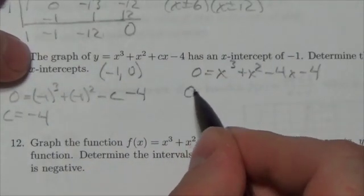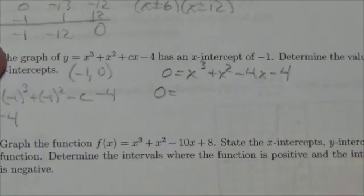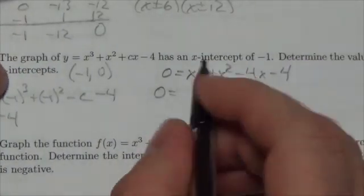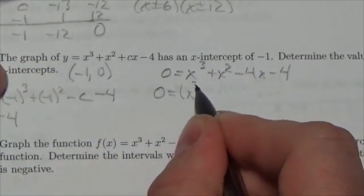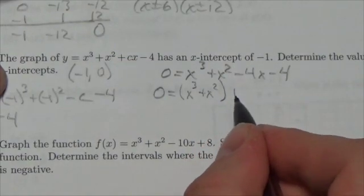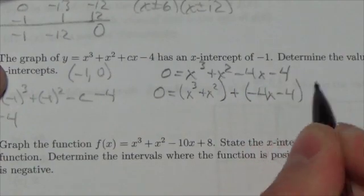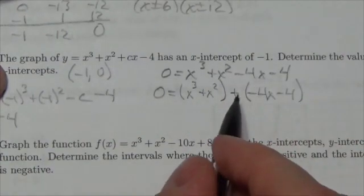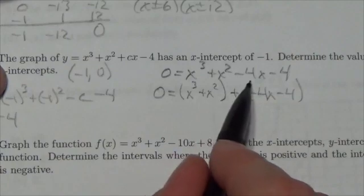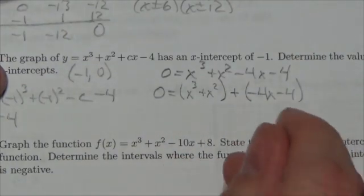Another thing that I could do here to get my other x-intercepts, which, by the way, is the same as finding the other roots of the equation, I can do grouping. I'm going to group the first two terms together, okay, with parentheses. I'm going to put a plus sign here, and I'm going to group the last two terms together as well when I do grouping.